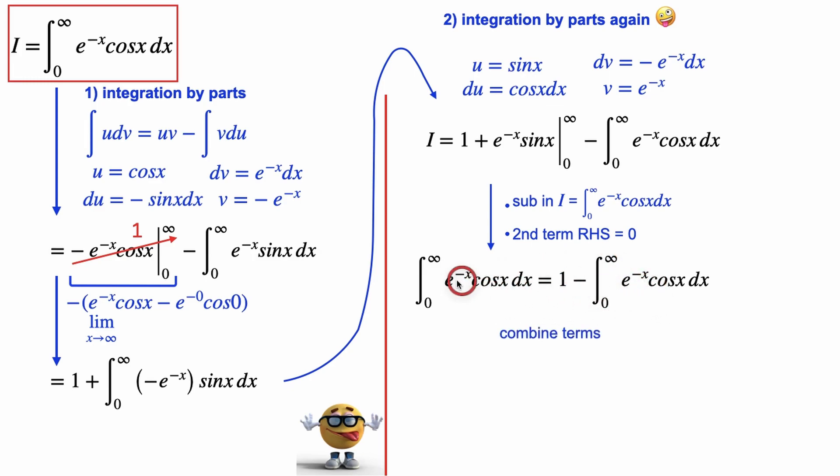So to solve this, we'll move this over to the other side, kind of combine like terms. We now have two of them. Divide by 2, and we got our integral of e to the negative x cos x from 0 to infinity is 1 half.